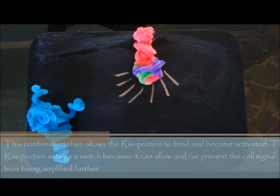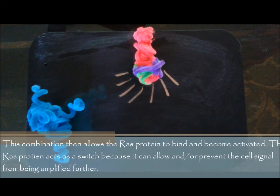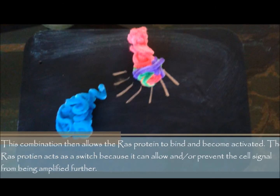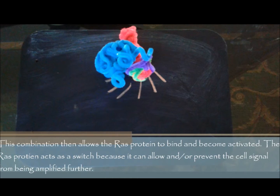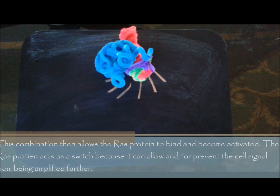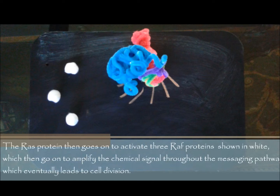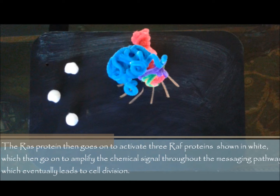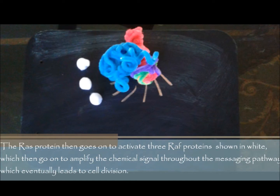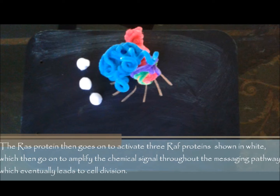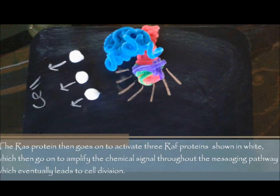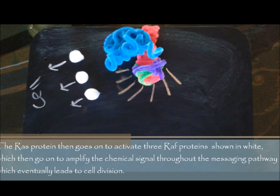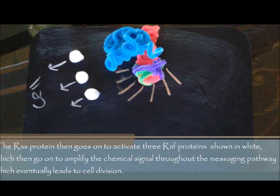This combination then allows the RAS protein to bind and become activated. The RAS protein acts as a switch because it can allow and or prevent the cell signal from being amplified further. The RAS protein then goes on to activate three RAS proteins shown in white, which then go on to amplify the chemical signal throughout the messaging pathway, which eventually leads to cell division.